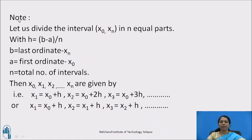Let us have a very important note for solving examples. Let us divide the interval x naught to x_n in n equal parts with h equals b minus a whole divided by n. Division of this interval into n equal parts is done with the help of this width h, where b is our last ordinate x_n, a is the first ordinate x naught, and n is the total number of subintervals.